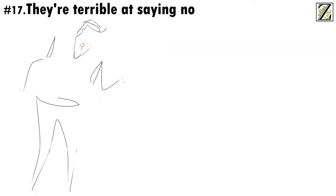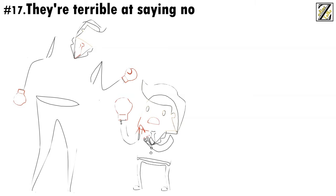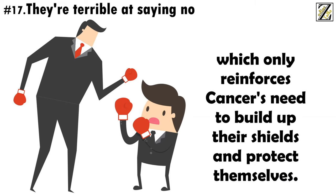Number 17. They're terrible at saying no. Cancers are pretty bad at saying no, particularly when it comes to people they love. Unfortunately, this means that people are often taking advantage of their gentle disposition, which only reinforces Cancers' need to build up their shield and protect themselves.